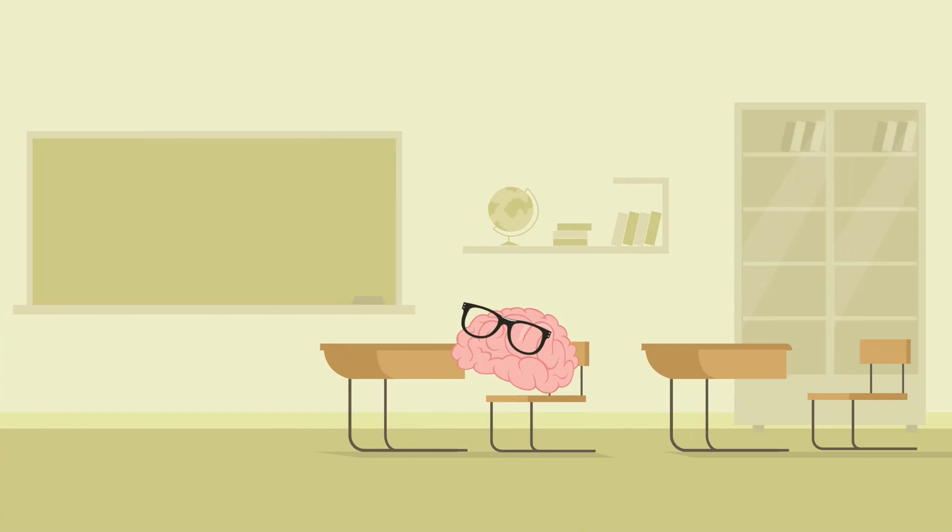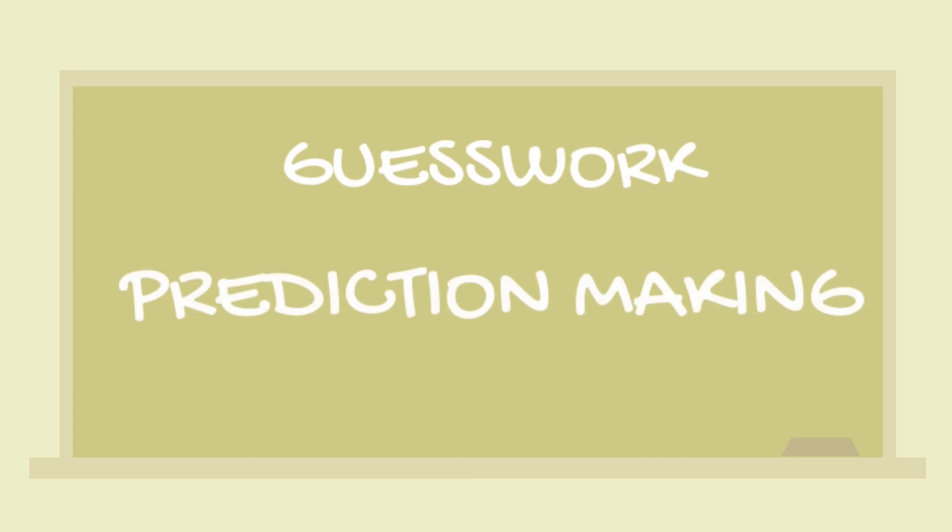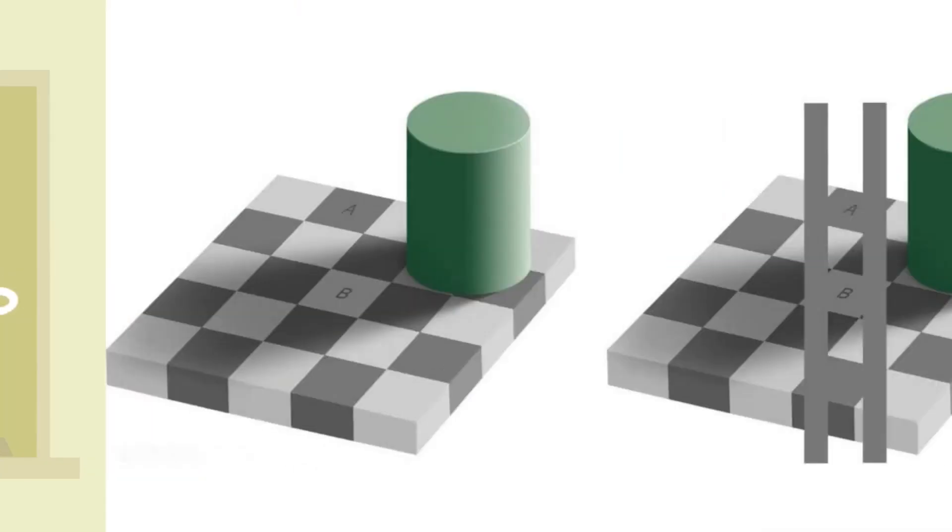You may be thinking, since the brain omits so much stimuli, how exactly are we able to see a complete, but not necessarily accurate, representation of what's in front of us? This is accomplished through the brain's series of guesswork and prediction making. Our brain fills in the gaps using information already stored in our memory.